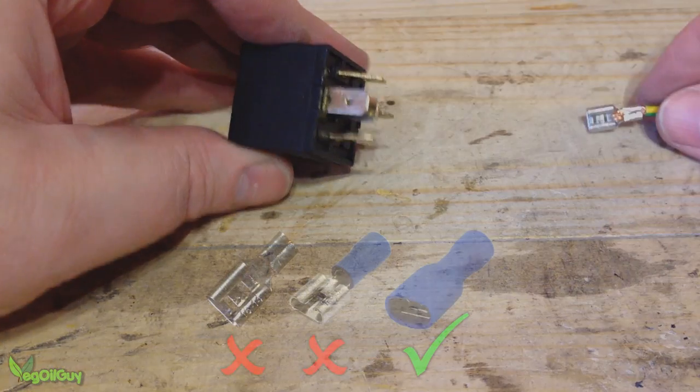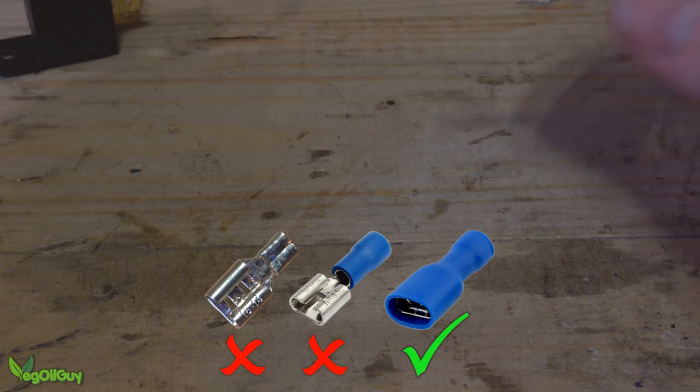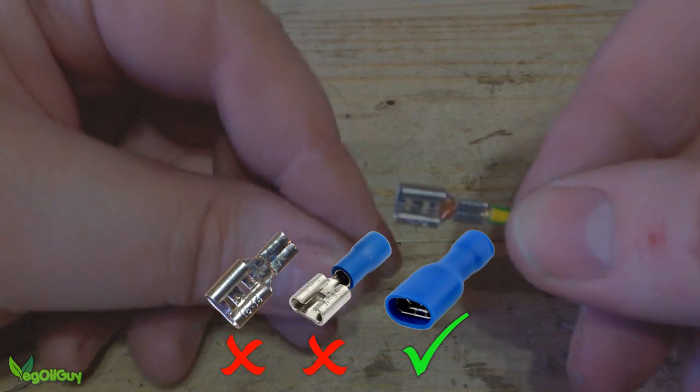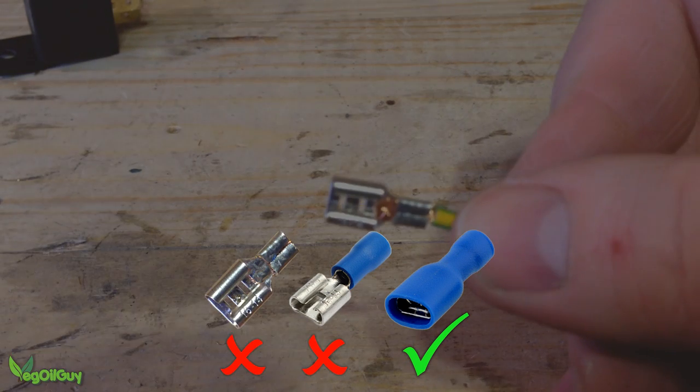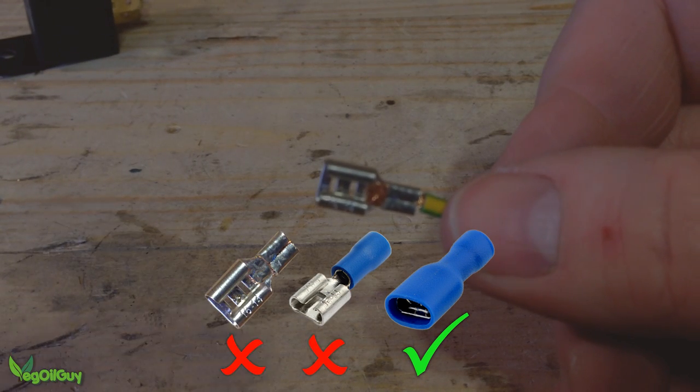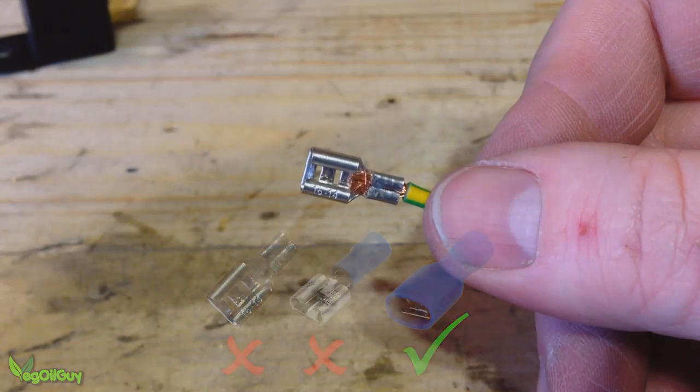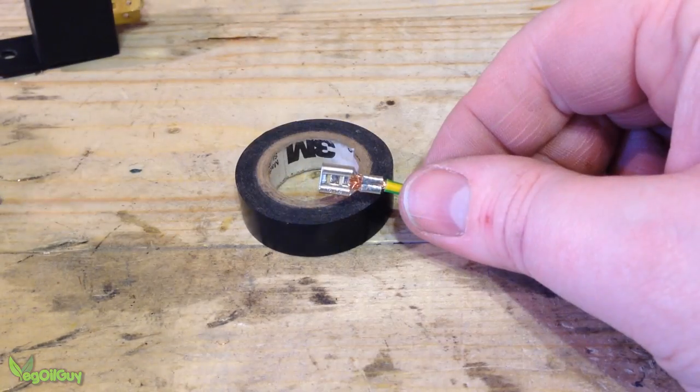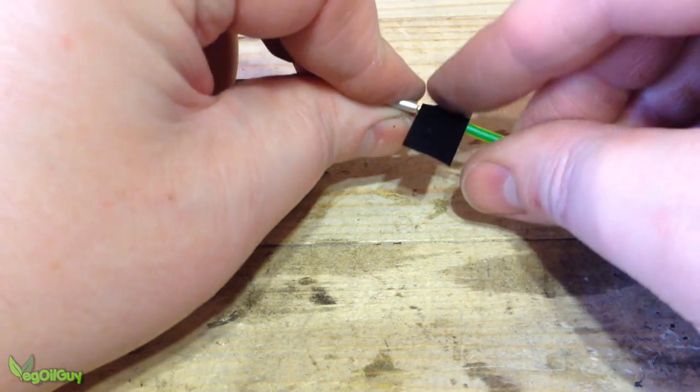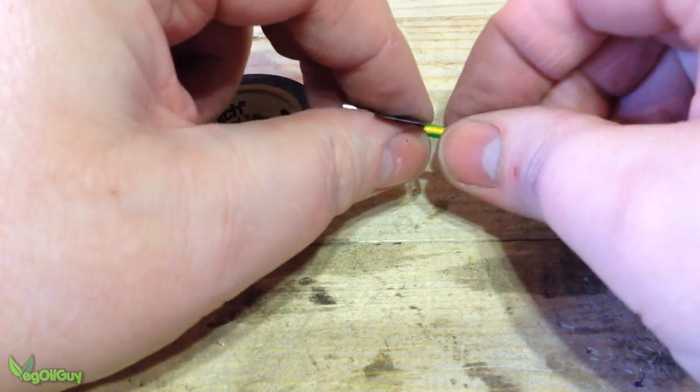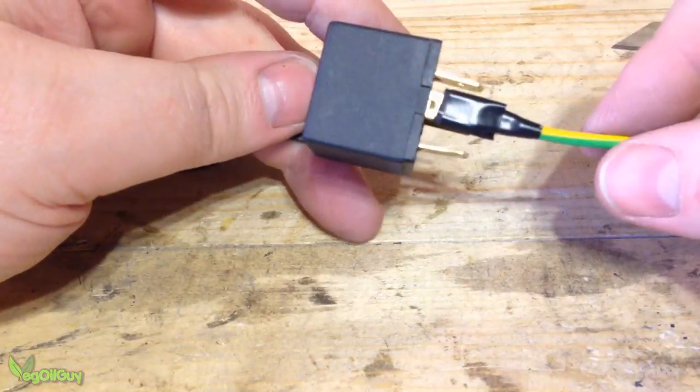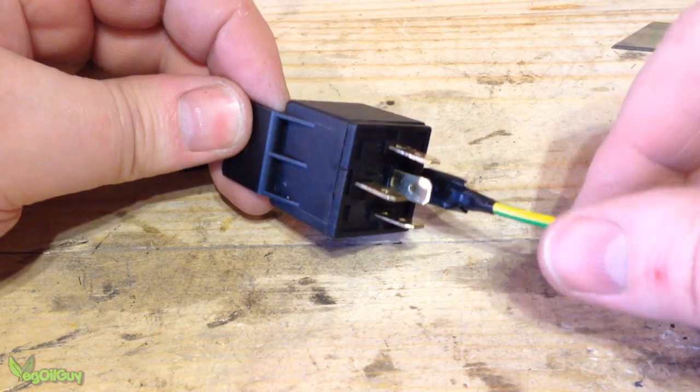Ideally purchase the fully insulated spade connectors, not like the ones you can see me using. Remember it's quite possible the spade connector can come loose and be flapping around and if that's a live wire, it can lead to all kinds of terrible things. So if the end is insulated, fantastic. So if you're going to use the same sort as me, please make sure you wrap it well with insulation tape.